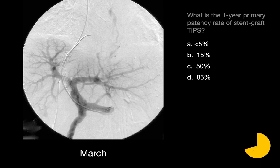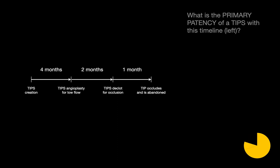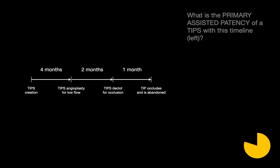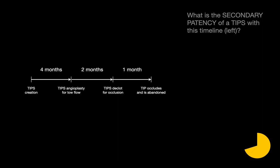The one-year primary patency rate of stent graft TIPS is around 85%. The primary patency of this TIPS is four months. The primary assisted patency of this TIPS is six months. The secondary patency of this TIPS is seven months.